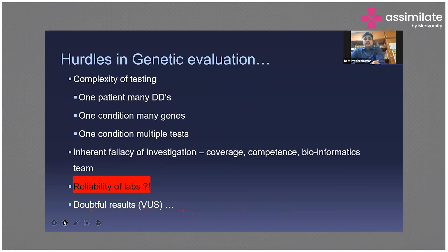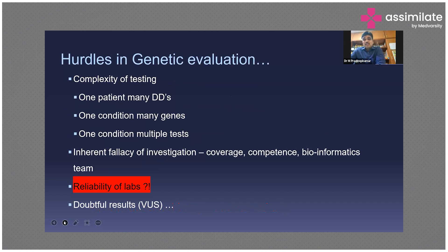The major hurdle in genetic evaluation is the complexity of testing. One patient may have many differences in diagnosis. A child with neurodevelopmental delay will not have just one diagnosis — you will have a big list including neuro-regression, inborn errors of metabolism, brain developmental abnormalities, or early infantile epileptic encephalopathies. All these come to mind when you have a child with simple developmental delay.